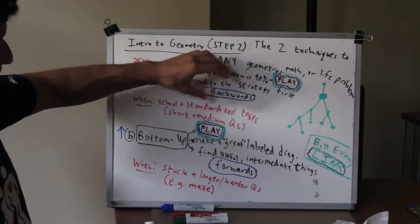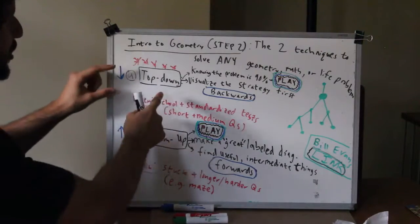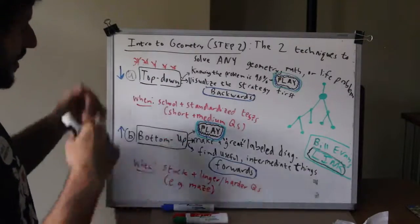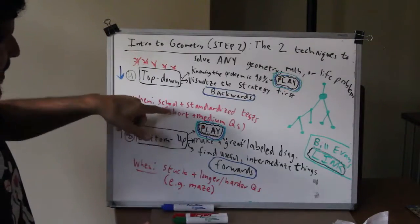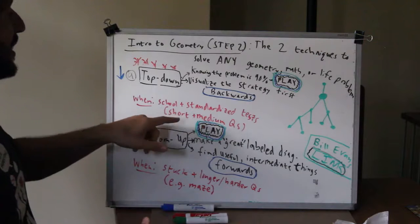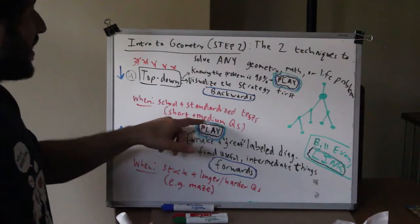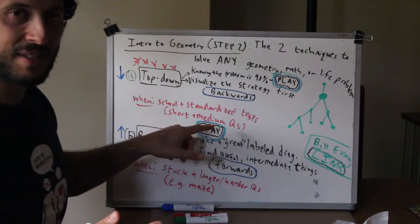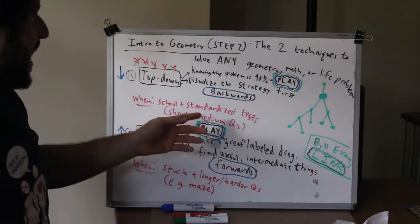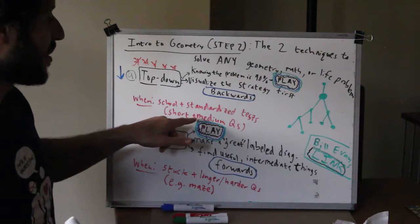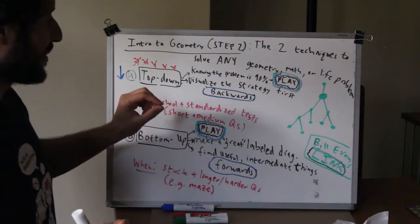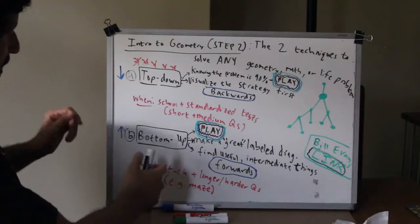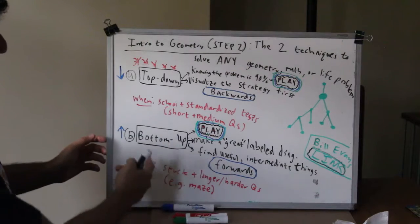At least for this level, typically in school problems and standardized tests like the SAT, whatever the tests are in your country, you're going to see pretty short or pretty easy to medium questions. Medium could be difficult for you, medium size. You're typically not going to see some mega math proof or something really hard. For those, I think a lot of times you're going to improve and save a lot of time and get the hard questions right if you first visualize the strategy.